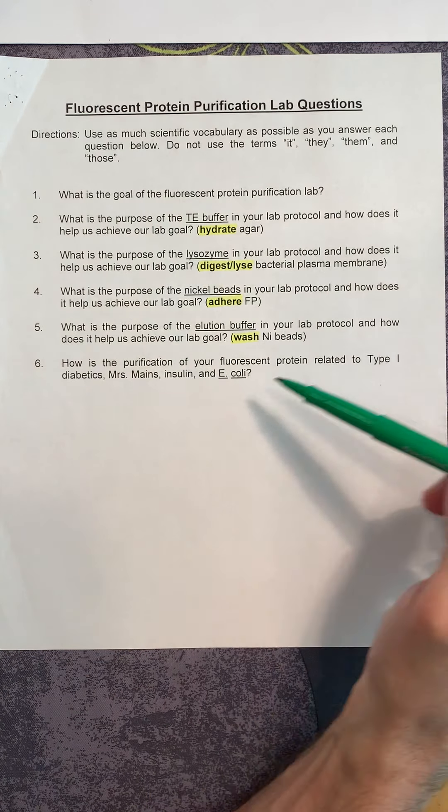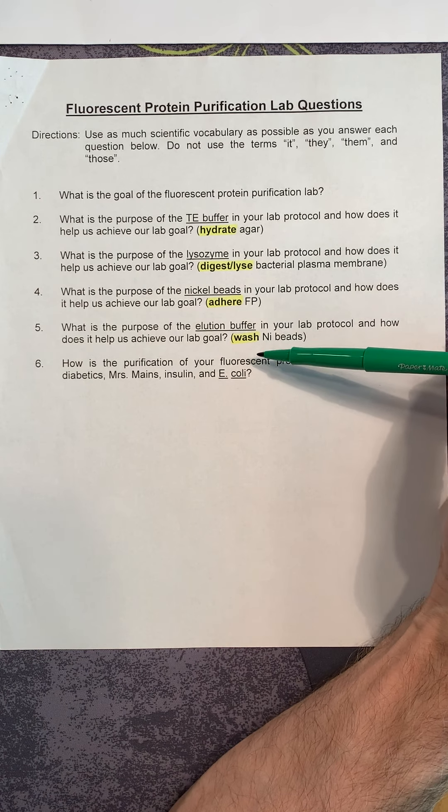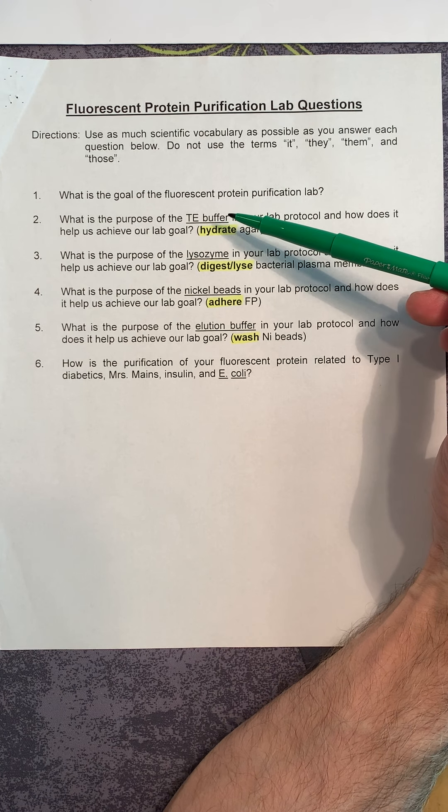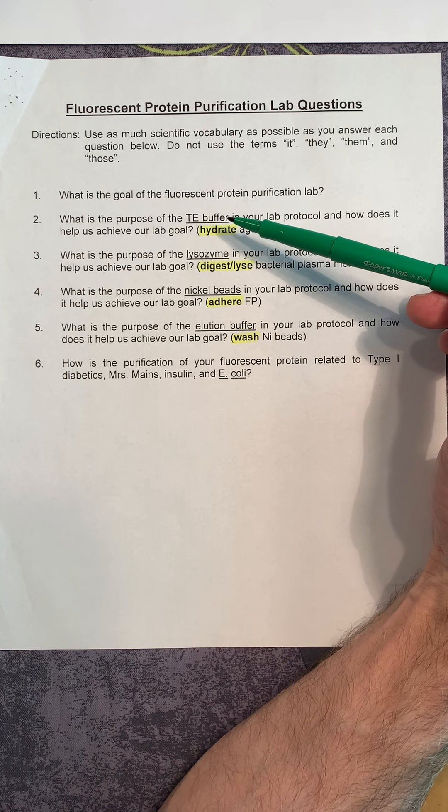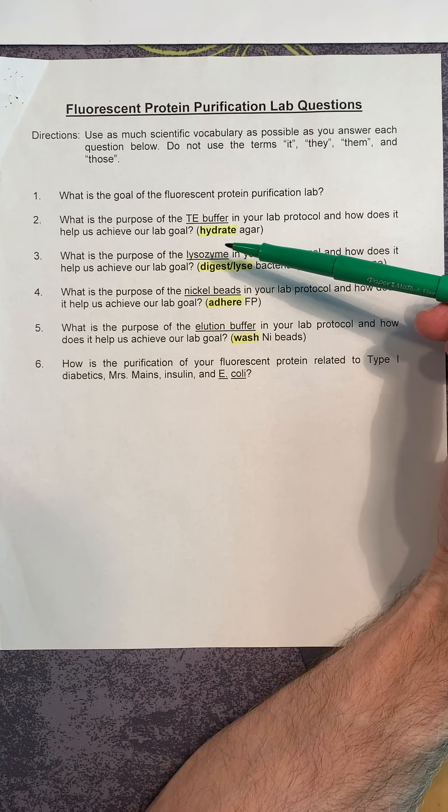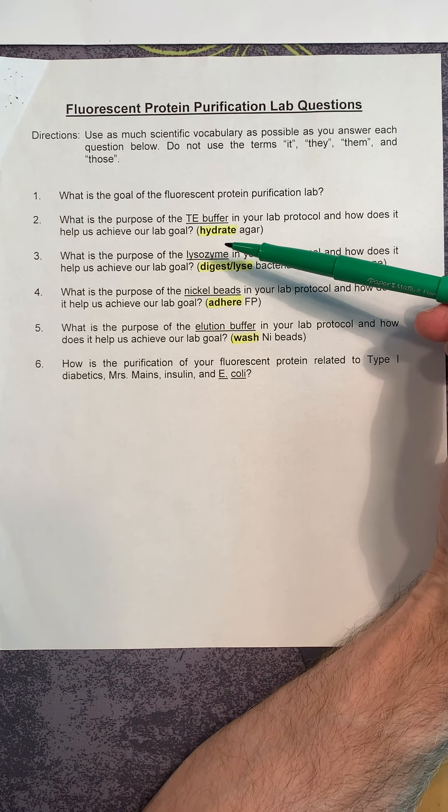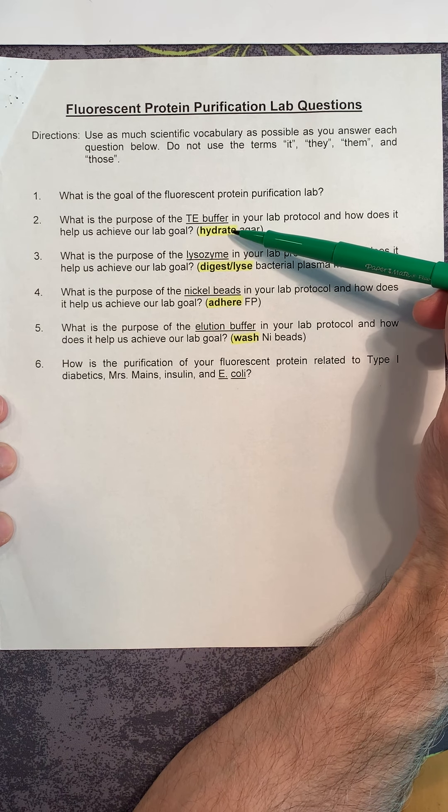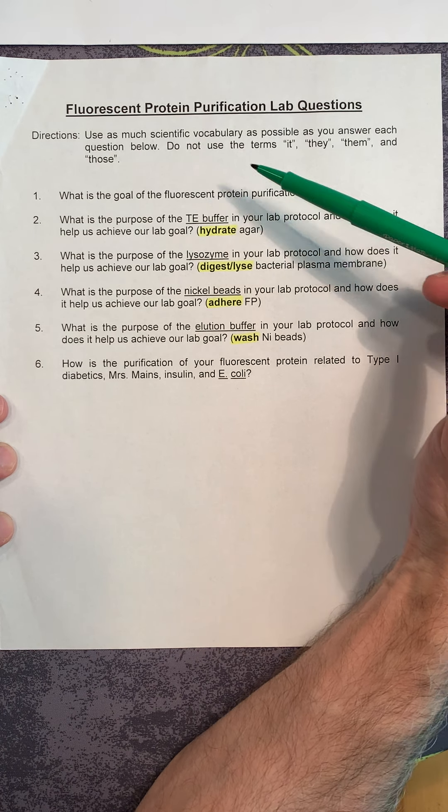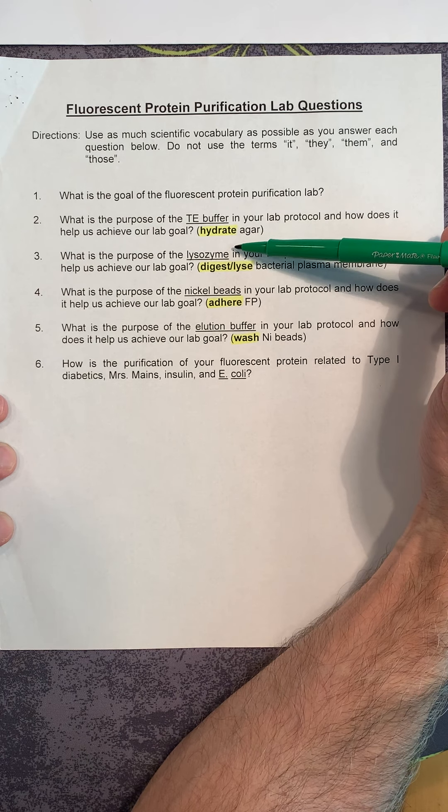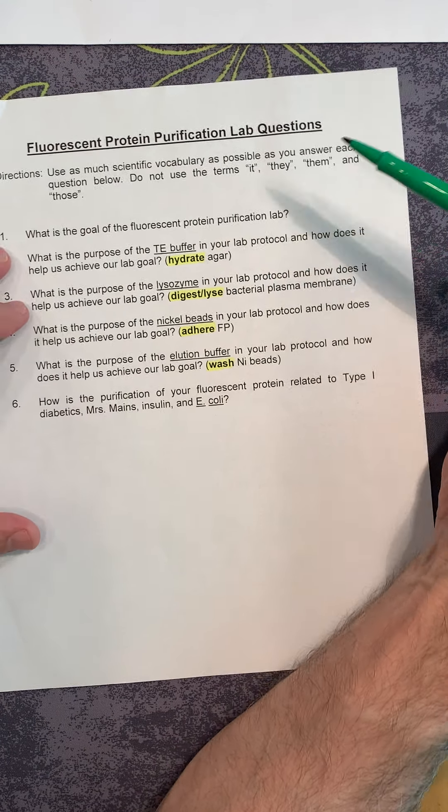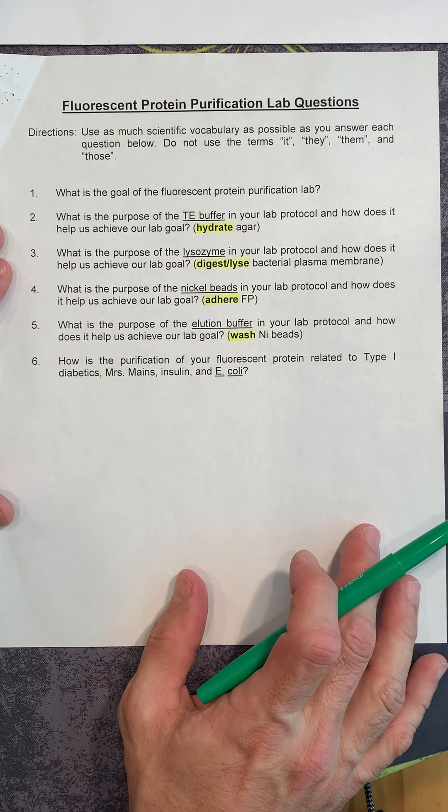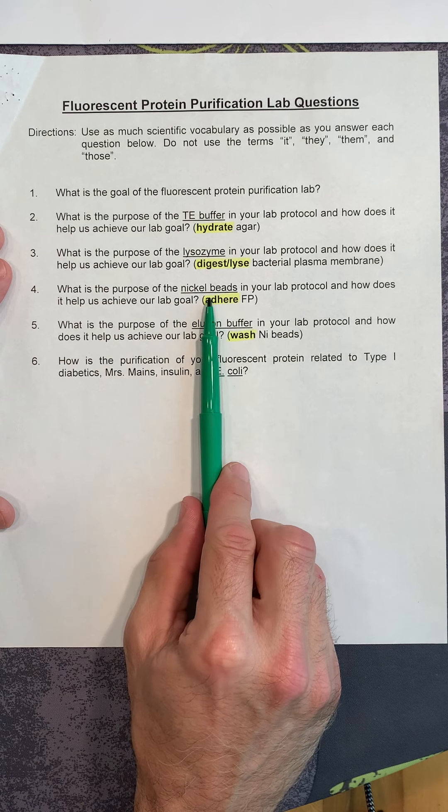This handout actually shows why you use each one. We use the TE buffer, that's the buffer we originally put on the plate before we rubbed the surface of the petri plate to get the bacteria off. We use the TE buffer because it hydrates the surface of the agar. We then use the lysozyme because lysozyme cuts open the cells and allows the cytoplasm to be released from the cell.